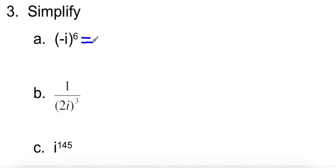We have negative i to the sixth power. That negative, we can treat as negative 1 to the sixth power and i to the sixth power. We can split it up that way. So negative 1 to the sixth power, that's just going to be positive 1. So we don't really care about that. So what we're really looking at is i to the sixth power.